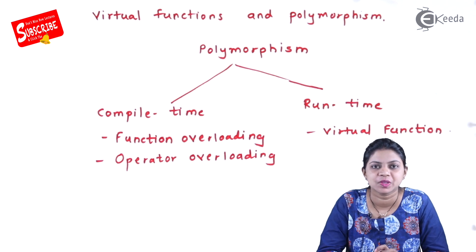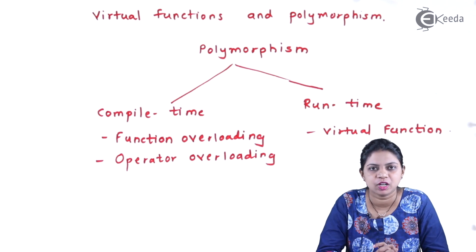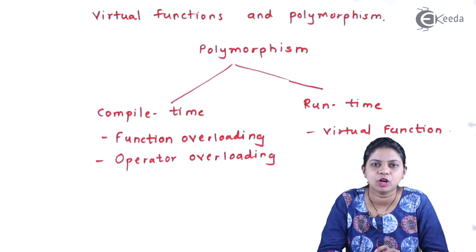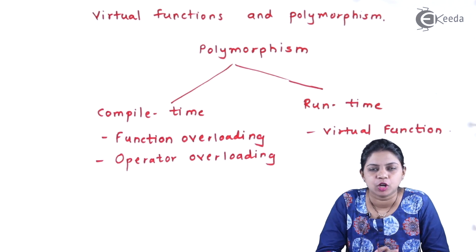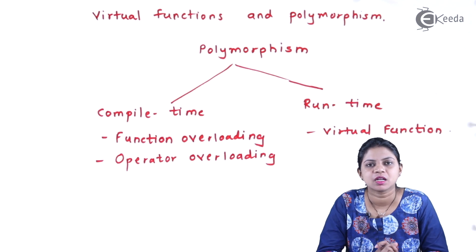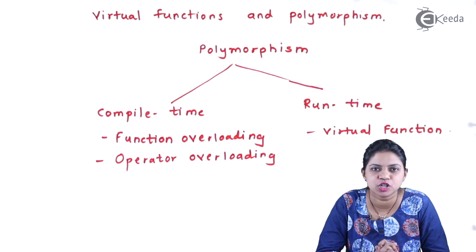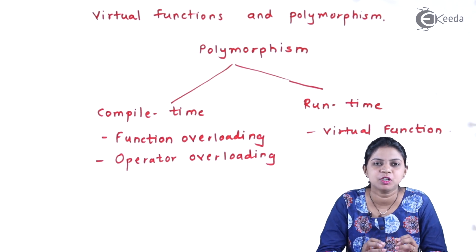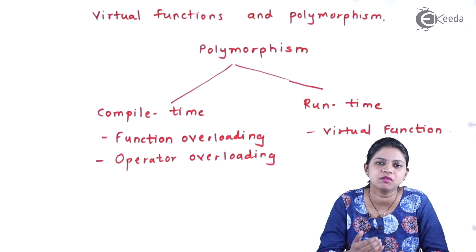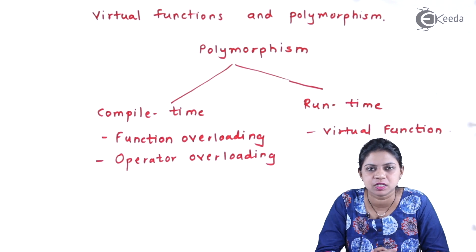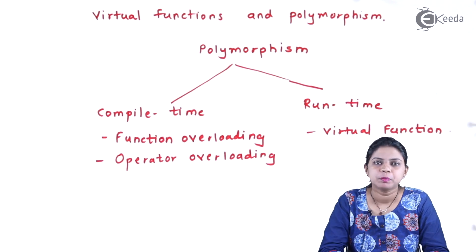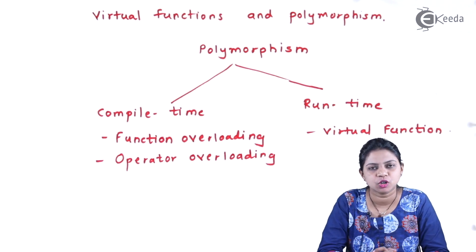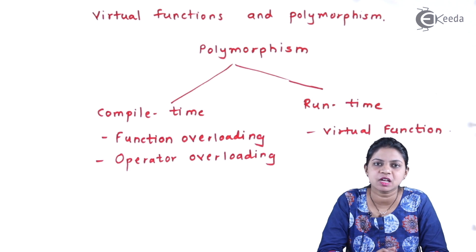Now, what is runtime polymorphism? There comes a situation where both the function name and parameters are the same. In this case the compiler gets confused about which function to call, because the function name and signature are the same everywhere. To implement this concept we use a feature called virtual function.